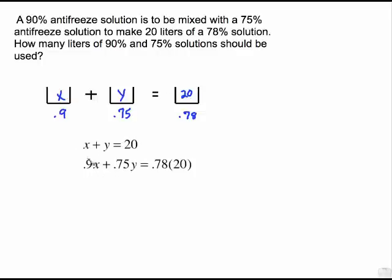The other equation comes from a product. 90% of this. Remember, of means times. So 0.9x. This represents actually how much antifreeze would be in this beaker. 0.75Y. That represents how much antifreeze would actually be in this beaker if we could separate out the antifreeze from the other liquid. And then over here is a product of these two things. 0.78 times 20.